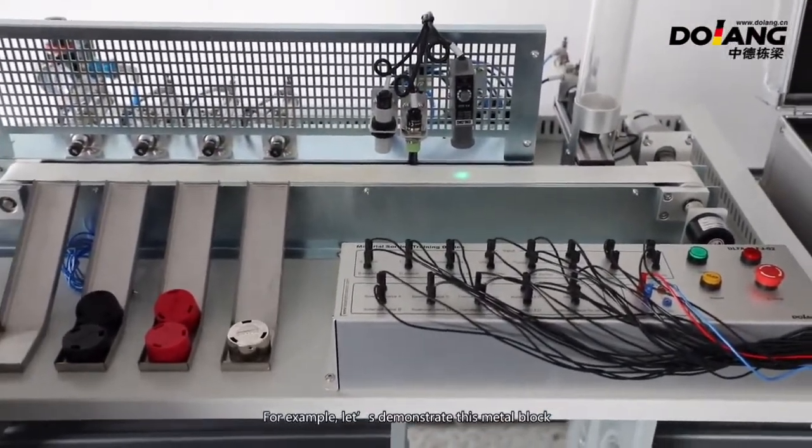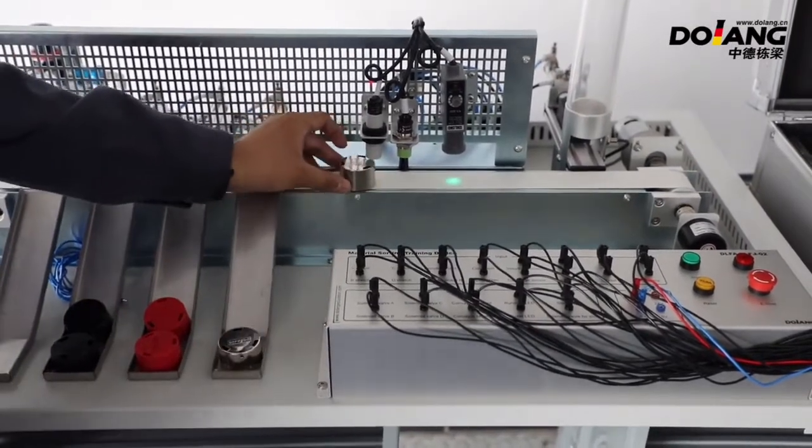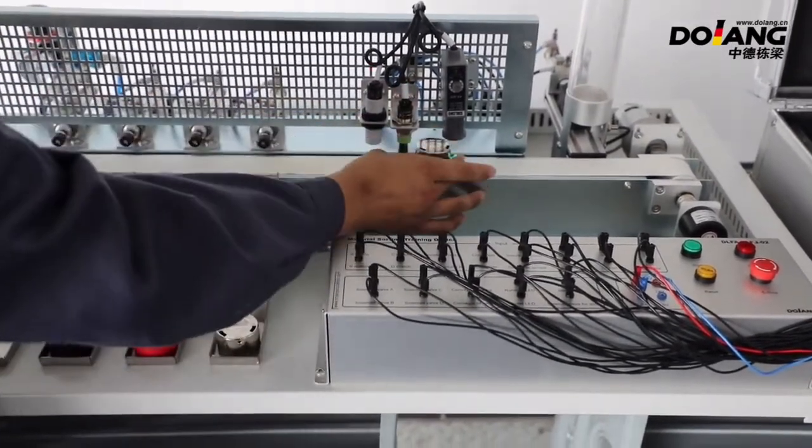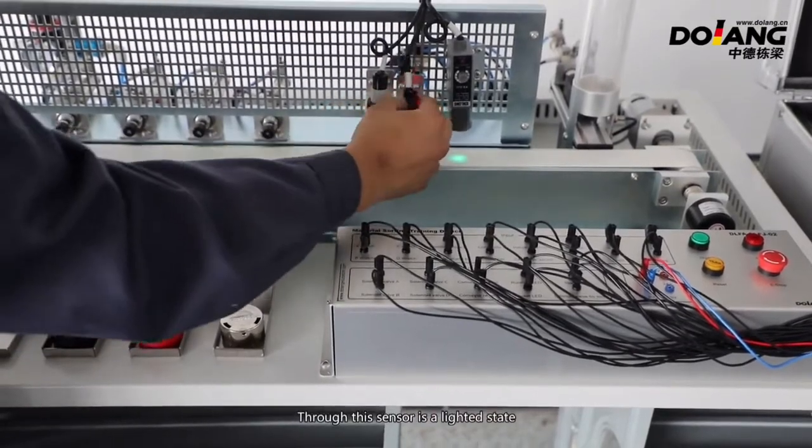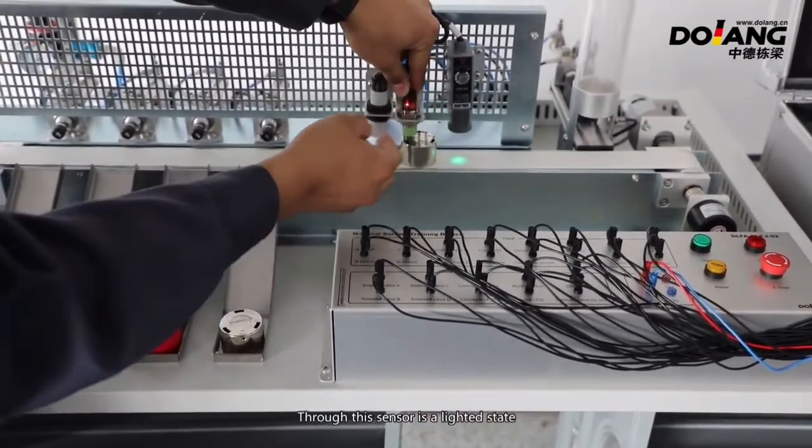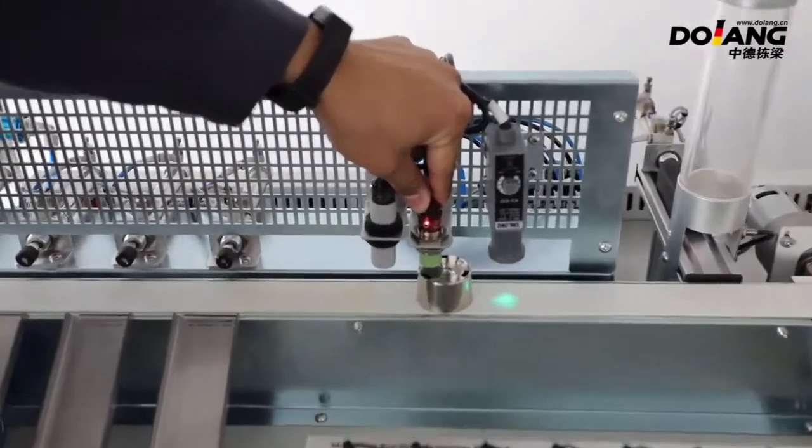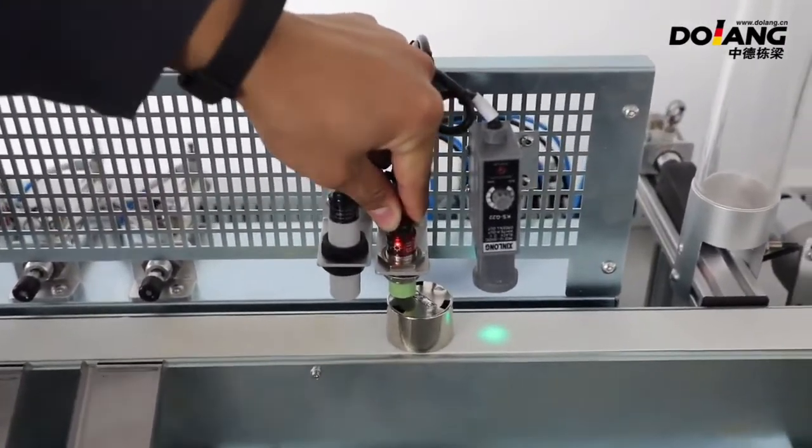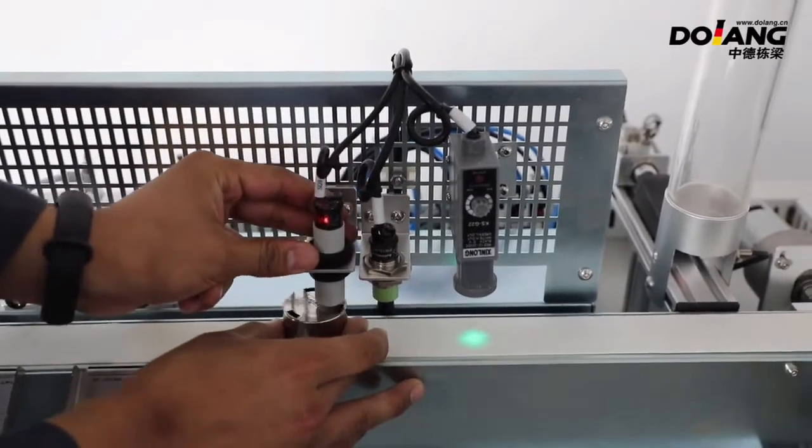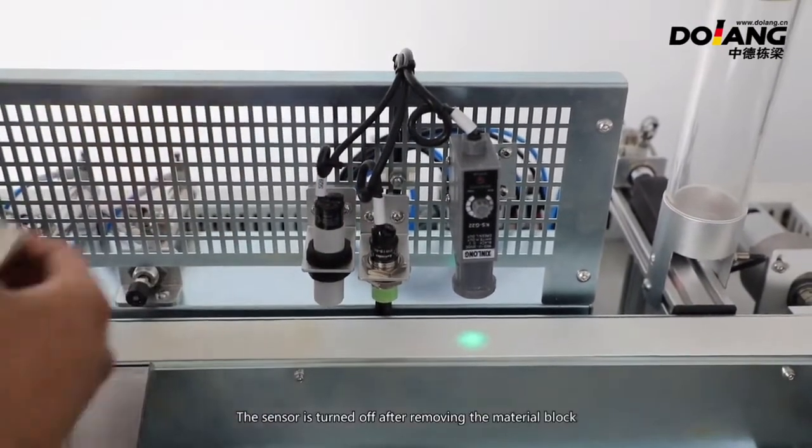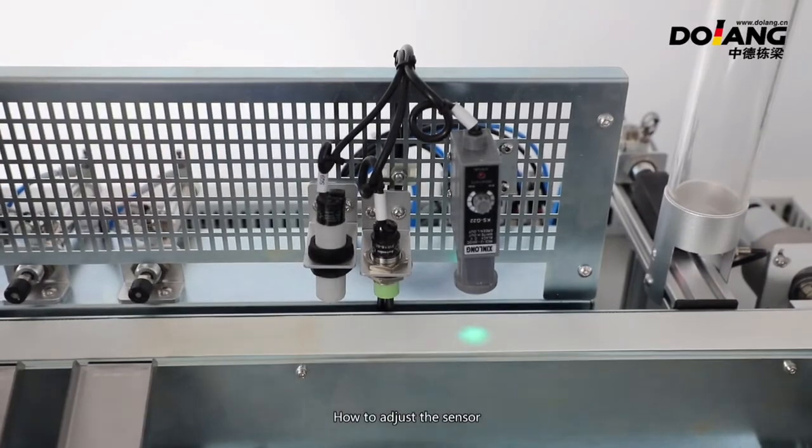For example, let's demonstrate this metal block. After passing here, through this sensor is a light state. The light means that the material block is detected. Same with this one. The sensor is turned off after removing the material block.